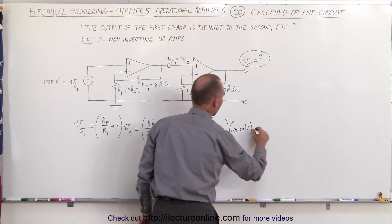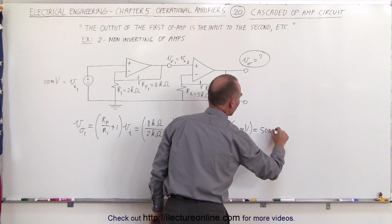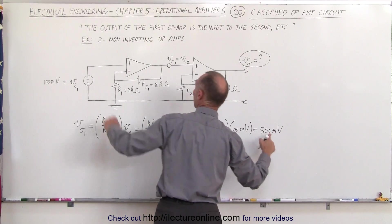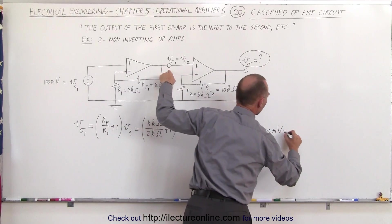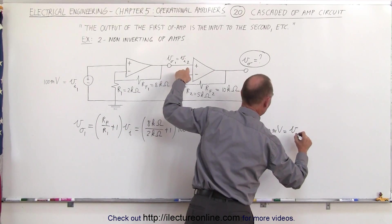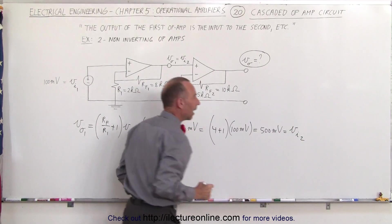This ultimately becomes 500 millivolts, which is the output of the first op-amp over here, which becomes the input of the second op-amp.